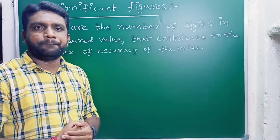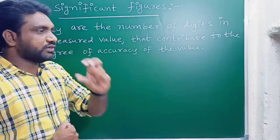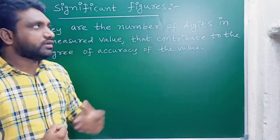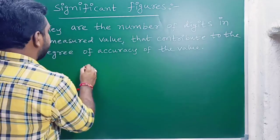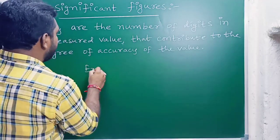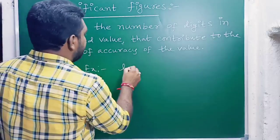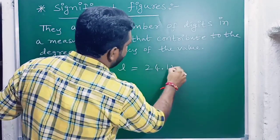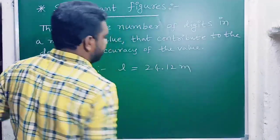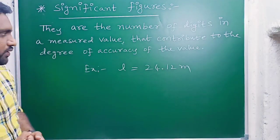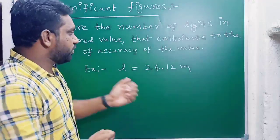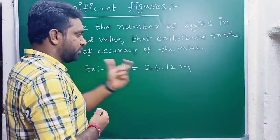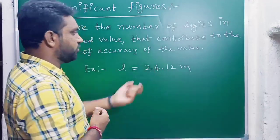Significant figures also tell us what are the accurate values and what are the inaccurate values in a measured physical quantity. Let's see one example to understand the purpose of significant figures. Consider length equal to 24.12 meters as our measured value.